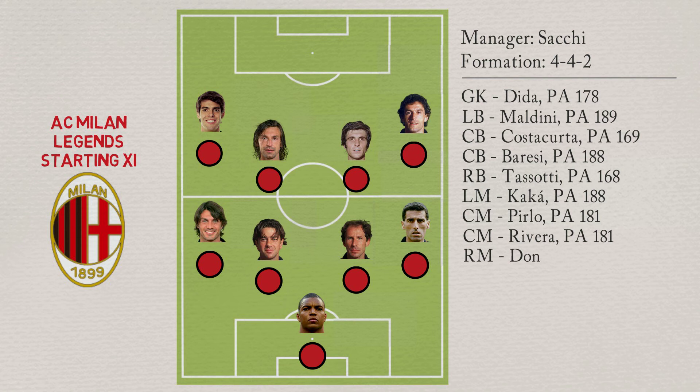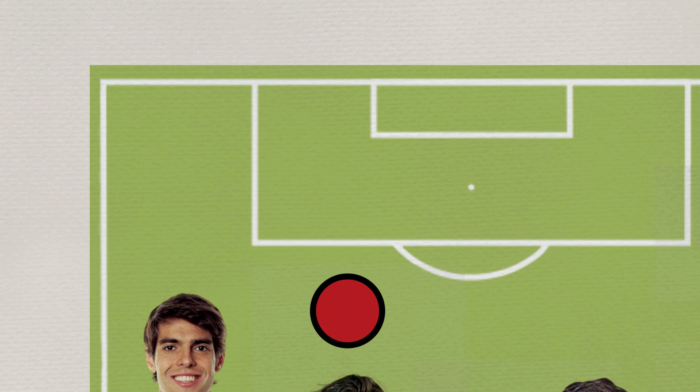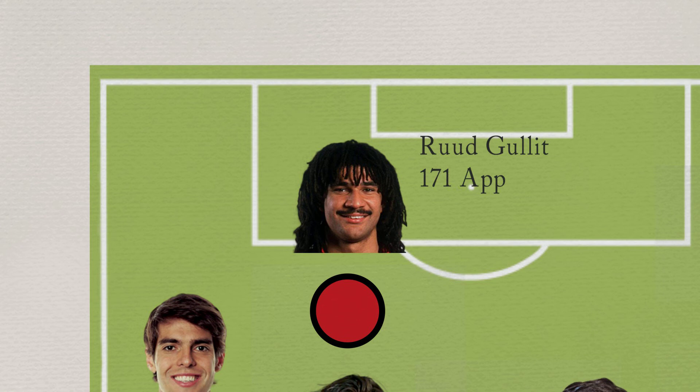As second striker, Ruud Gullit. The Dutchman has made 171 appearances with 56 goals for AC Milan, and won 9 major trophies. Gullit has a potential ability of 189.